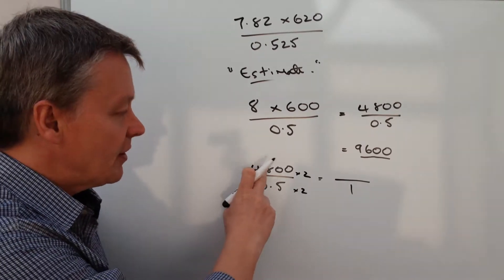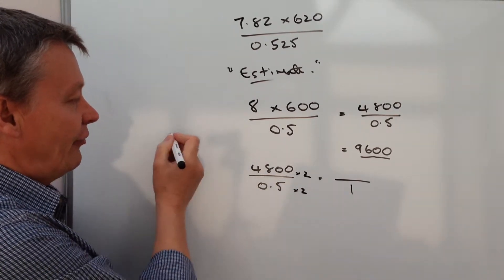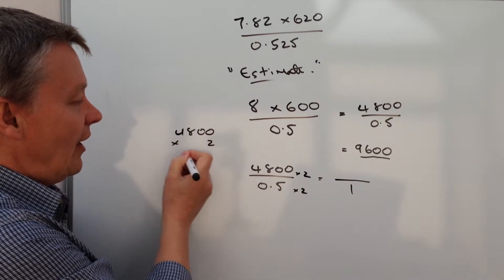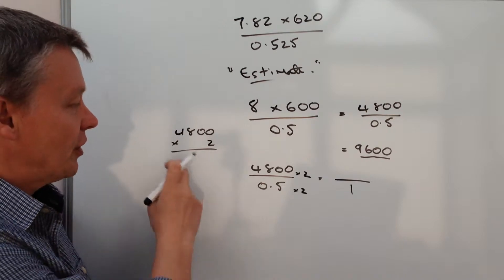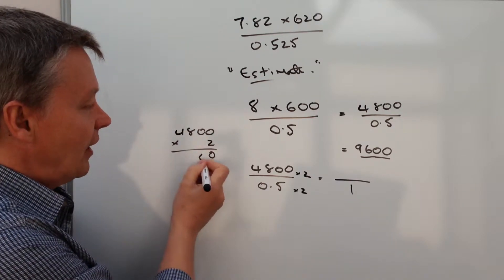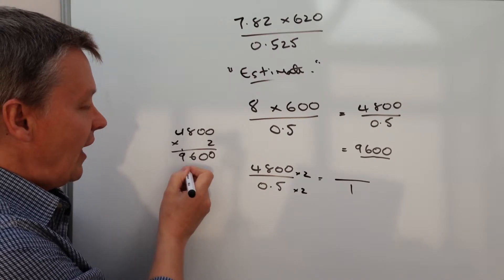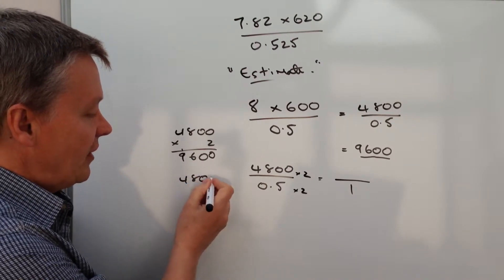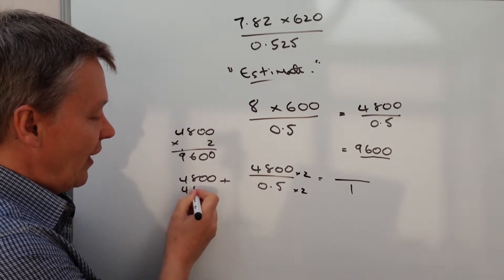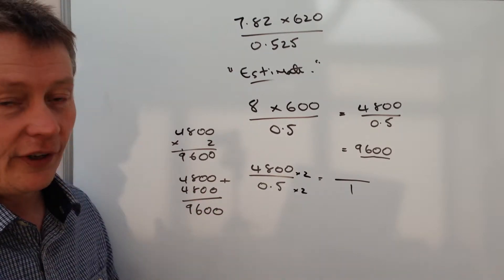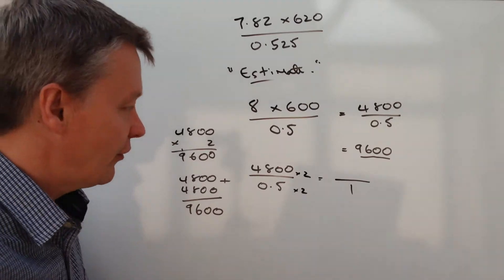So that means my calculation actually is 4,800 times 2. Now, however you do that, whether you just do a bit of short multiplication like this or whether you actually just simply add 4,800 to 4,800, doesn't really matter. It's absolutely fine. You're still going to get the same answer both ways.